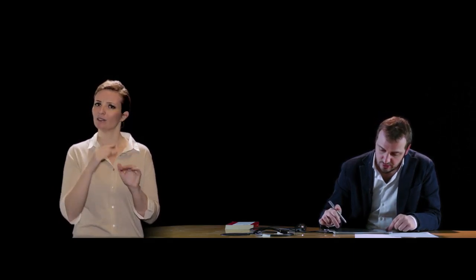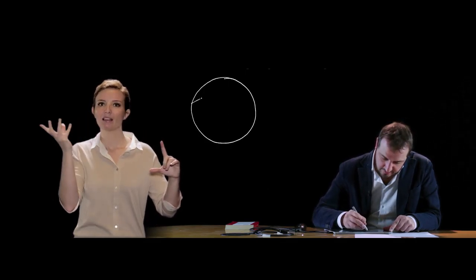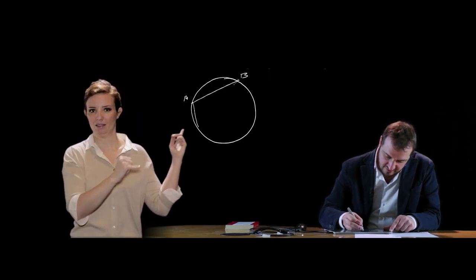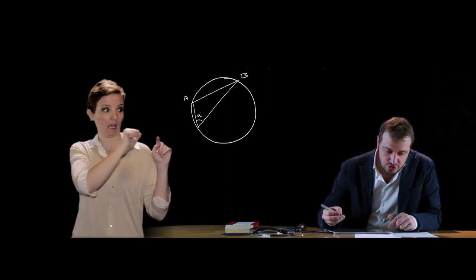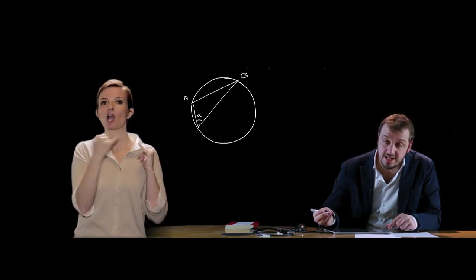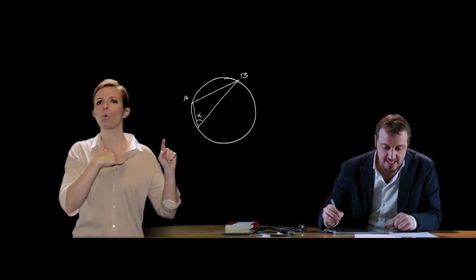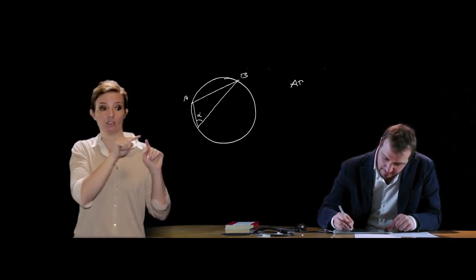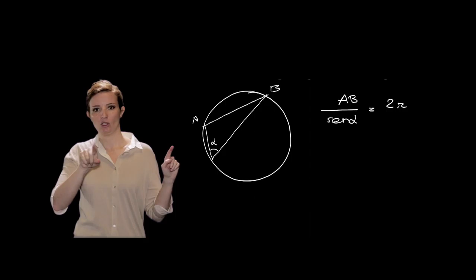Un'altra applicazione dei teoremi sui triangoli rettangoli si vede sulla circonferenza, nel cosiddetto teorema della corda. Prendendo una corda AB della circonferenza e un qualsiasi angolo α alla circonferenza che sottende AB, il teorema della corda afferma che il rapporto tra la corda e il seno di uno qualsiasi degli angoli alla circonferenza che insistono su di essa è uguale al diametro: AB/sin(α) = 2R.